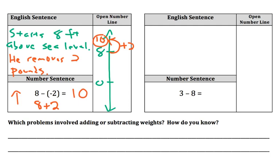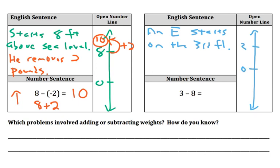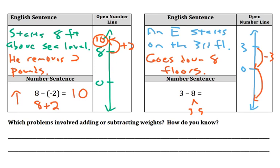For this last one, it says 3 minus 8. We're subtracting positive numbers here, so I'm going to think about this as an elevator problem. An elevator starts on the third floor, and then subtracting 8 means the elevator goes down 8 floors. So I go 3 down to 0, and then I'm breaking up that 8 into a 3 and then 5 more floors to go down. I'm going to go down 5 more. And that's why the answer is negative 5.